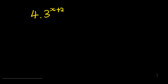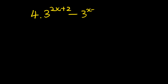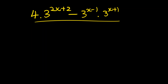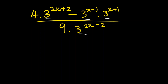Let's do another problem: 4 to the power of 2x plus 2, minus 3 to the power of x minus 1 multiplied by 3 to the power of x plus 1, divided by 9 multiplied by 3 to the power of 2x minus 2. First, expand and simplify the constants: 4 is 2 squared so it becomes 2 to the power of 2, and 9 is 3 squared so it becomes 3 to the power of 2.